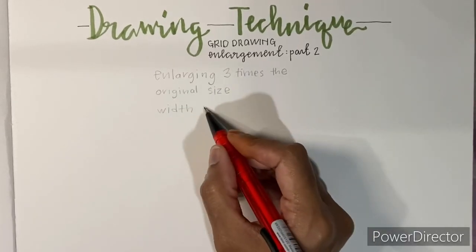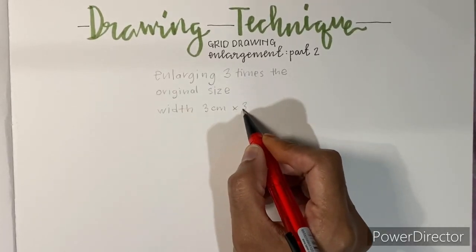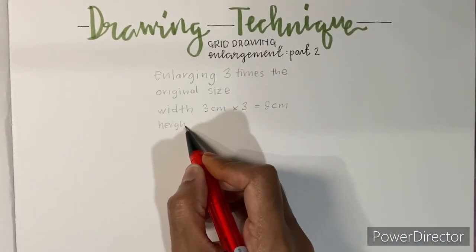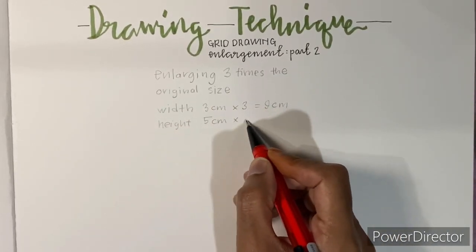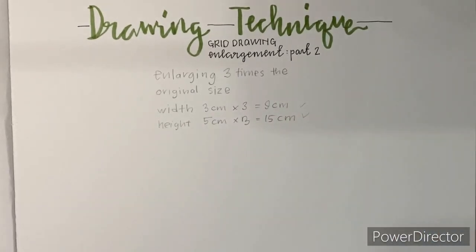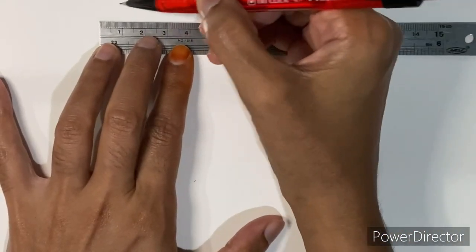The width of the sample picture is 3cm, times it by 3 you get 9cm. The height is 5cm, times it by 3 you get 15cm. So the new box will be 9cm by 15cm.